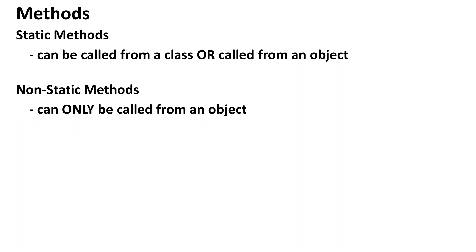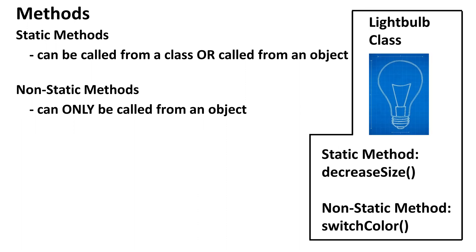To understand better, let's look at two different methods in the lightbulb class. The decreaseSize method is static, and the switchColor method is non-static. Let's write some code to see how we can access these methods. Lightbulb.DecreaseSize. DecreaseSize is static, so we can call it from the class itself. There doesn't even need to be an object in existence for us to call this method.